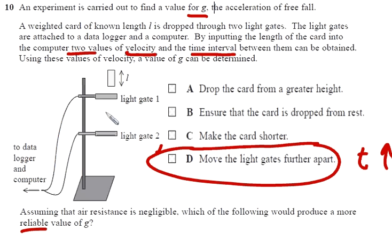Ensure that the card is dropped from rest won't necessarily improve anything. Make the card shorter will reduce the times and therefore increase errors. Move the light gates further apart, that interval time will increase if you move the light gates further apart, and so that should improve the result.